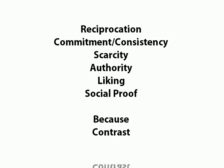They are: reciprocation, commitment, consistency, scarcity, authority, liking, and social proof. There are also two minor weapons of influence: because, and contrast. Now these are hardwired mechanisms that basically engineer compliance in people — they're much more likely to engineer compliance when they're used. And Dr. Cialdini has a variety of ways of learning how to use them ethically, because this stuff is powerful, very, very powerful.